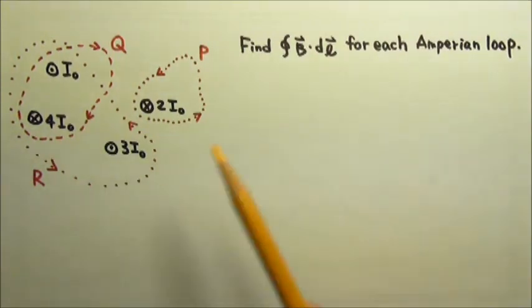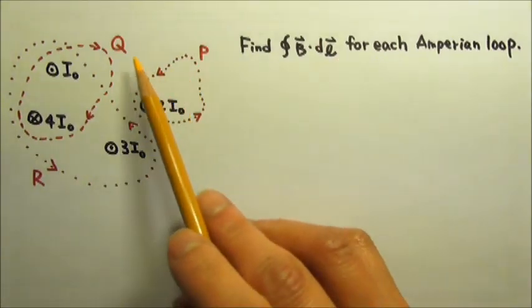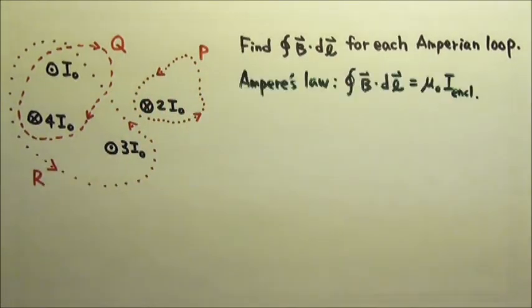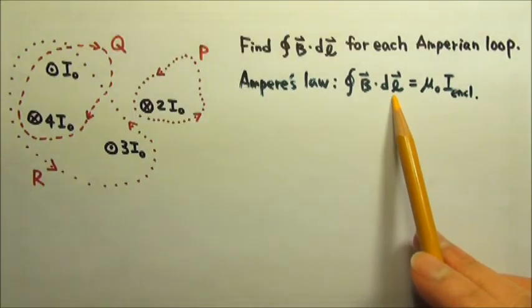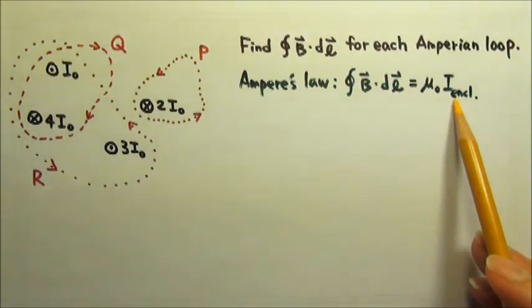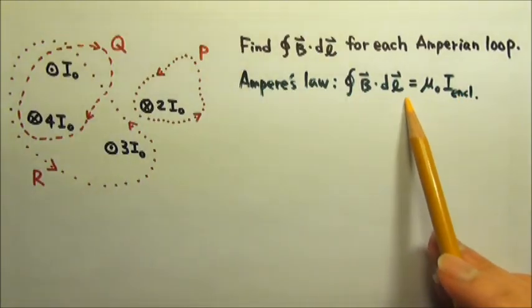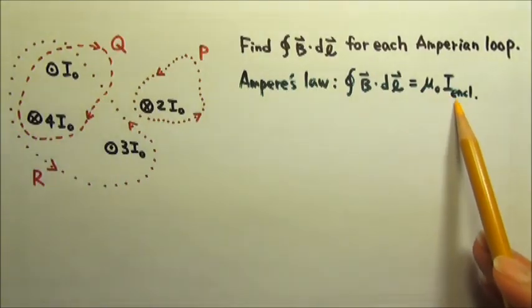For this problem, we're not going to carry out the integration. We're just going to apply Ampere's law to each closed loop. Ampere's law says the closed integral of B·dl equals μ₀ times the enclosed current. So to find this integral, we just have to find the net current enclosed by the loop.